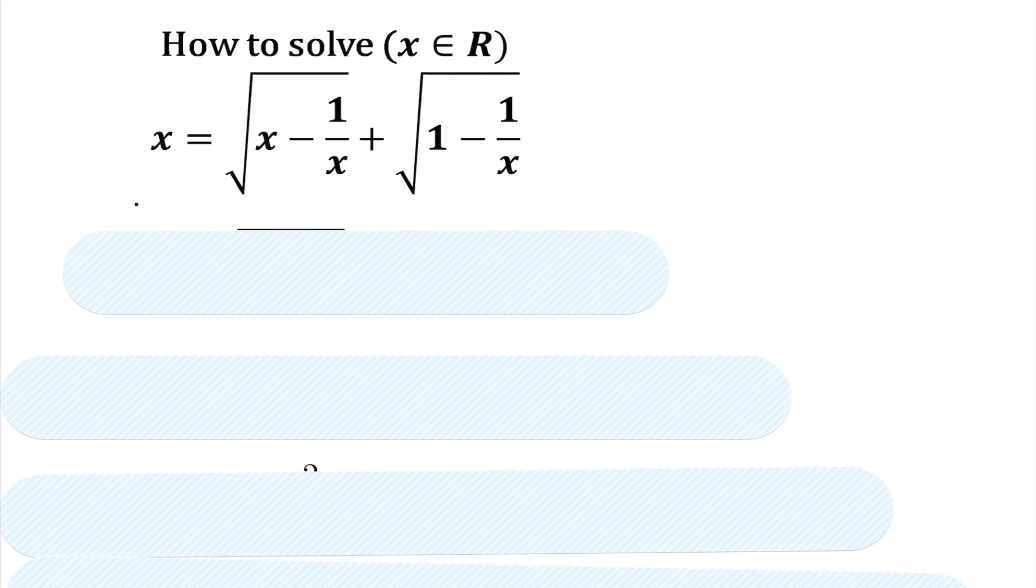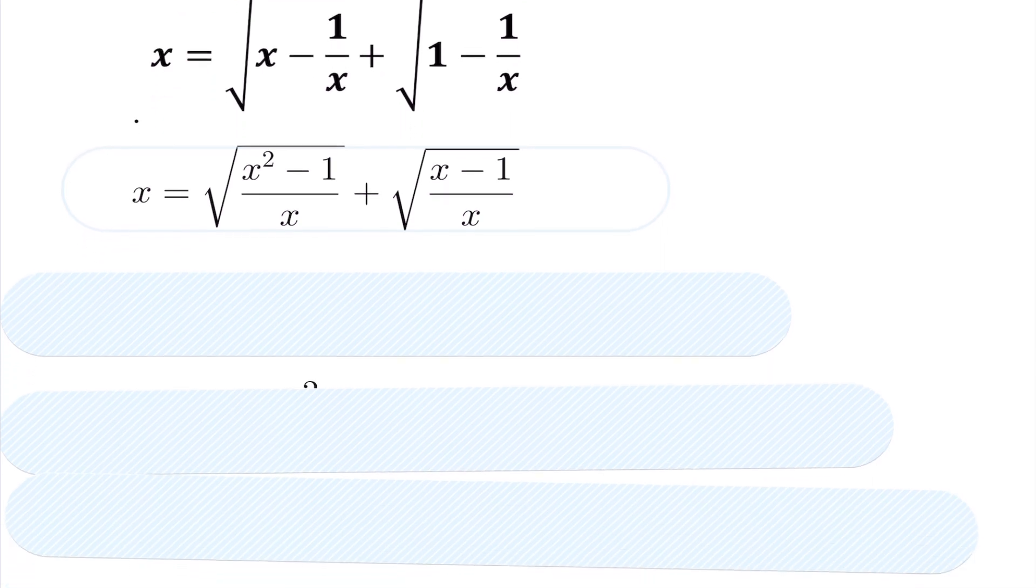So first way to solve this question is we're first going to get a common denominator on the right hand side under each root, giving us the following. So again, getting a common denominator, we now have the following.